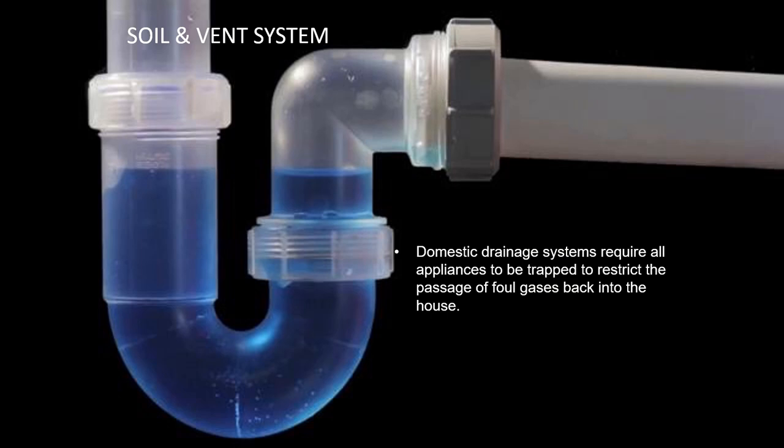Most soil and vent systems require a series of traps to be able to stop any foul gas from entering the system. If you look underneath your sink or your basin, what you'll see is what used to be commonly known as a U-bend. When you run water through the sink, it forms a level across itself and gives a water seal. So any gases that are coming up through the system can't get back up through the plug hole and cause a smell.